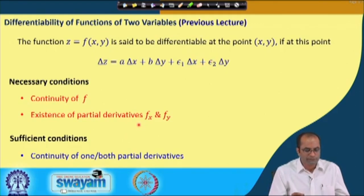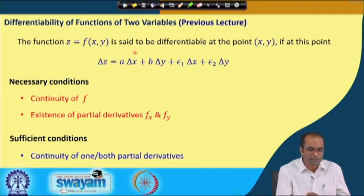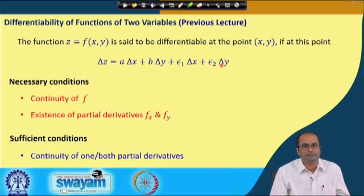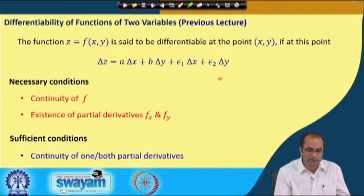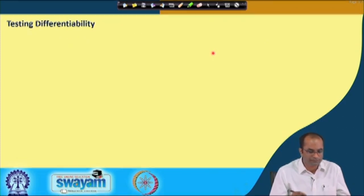To prove differentiability, we can either use the sufficient conditions — if the partial derivative is continuous, we can claim the function is differentiable — or we can directly test the definition by expressing delta z in the required form. Today we will learn another equivalent way: the limit test, which can be used to prove differentiability more easily.